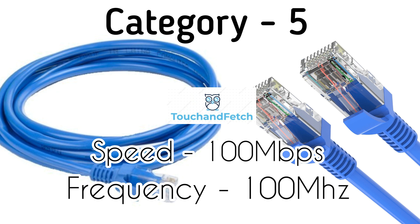The next one is Cat5. Cat5 is Category 5 cable. Speed: 100 Mbps, frequency: 100 MHz. This cable was used for Ethernet networks running at 10 or 100 Mbps and represented the starting stage of speed improvement before moving to upgraded cables for better speed.